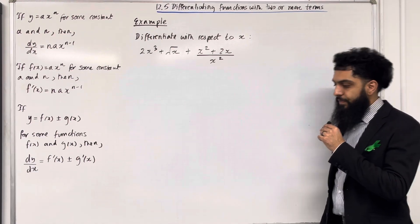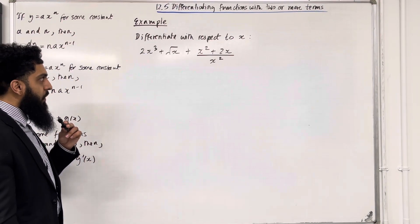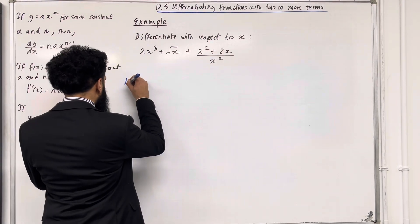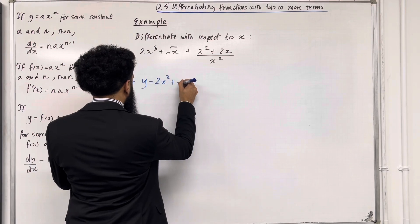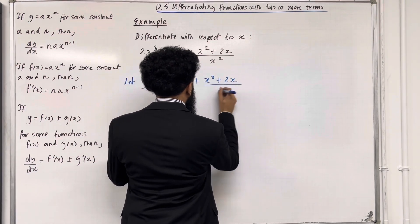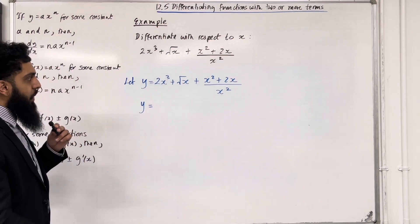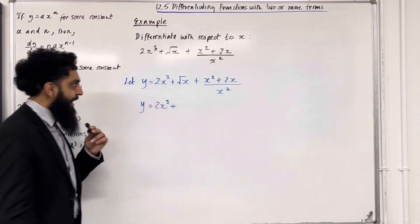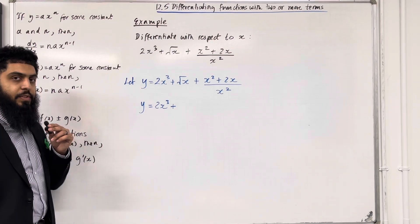Let's have a look at an example. Differentiate with respect to x: 2x³ plus √x plus (x² + 2x) all over x². The first step is to let y equal 2x³ plus √x plus (x² + 2x) over x². The first term can be differentiated, so we're going to keep it as it is: 2x³. The second term cannot be differentiated as yet — we need to rewrite it using laws of indices.